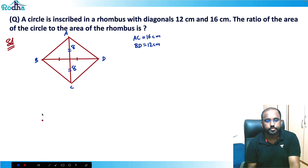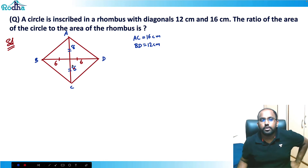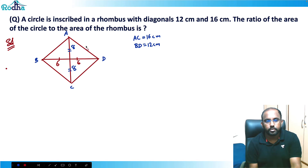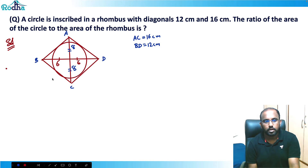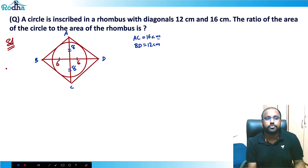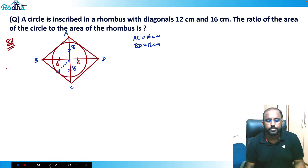A circle is inscribed in this rhombus. If I draw the circle, the radius of the circle also becomes the height of each triangle formed by the diagonals. So this radius is essentially the height h of the triangle.